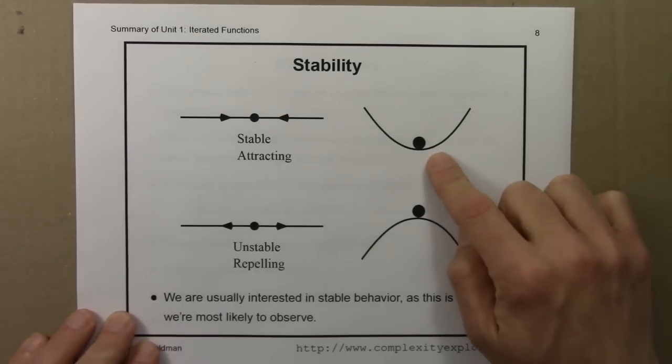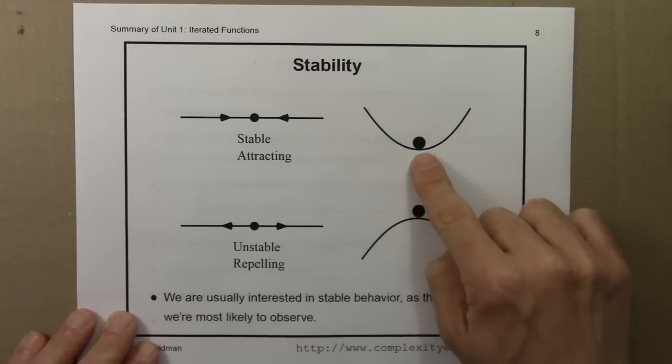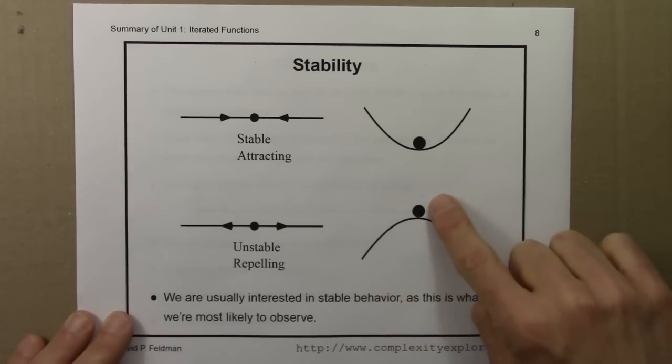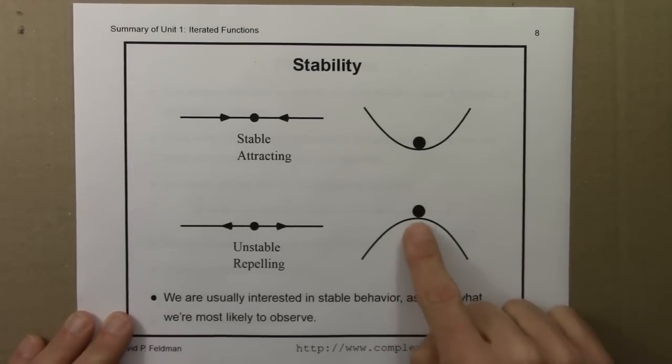A stable fixed point is like a marble on the bottom of a bowl. If we push this to either side it returns to its original position. An unstable fixed point is like a marble perched on top of a bowl. If we push it a little bit it moves to the right or to the left and does not return to the fixed point.